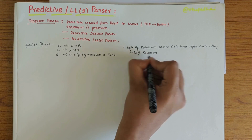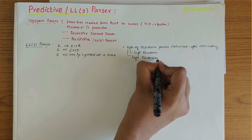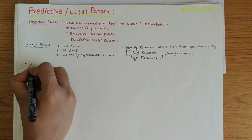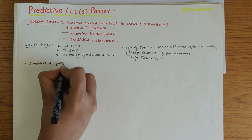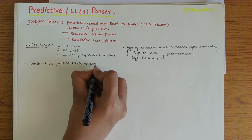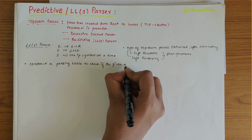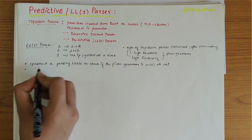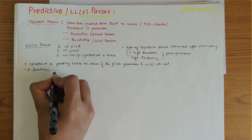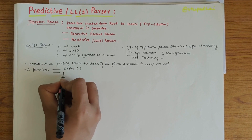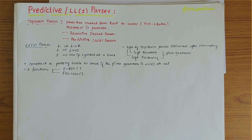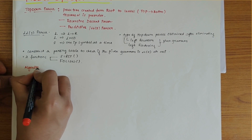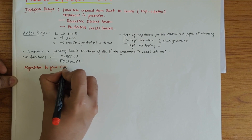In the LL1 parser we need to construct a parsing table to check if the given grammar is LL1 or not. In order to construct the parsing table, we need two functions: the first one is called FIRST and the other function is called FOLLOW. Now we'll be looking into the algorithm of these two functions, FIRST and FOLLOW.